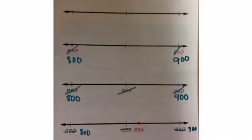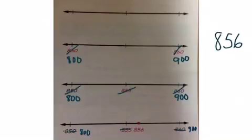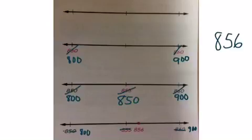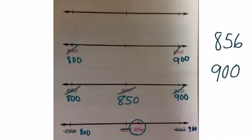Now let's use those same number lines but round to the hundreds place. Still using 856, I want to know which hundreds are closest. 800 and 900 are the two closest hundreds, so I filled those in. Halfway between 0 and 100 is 50, so 850 is the midpoint between 800 and 900. Placing 856 on the number line, it falls to the right, closer to 900 than 800.